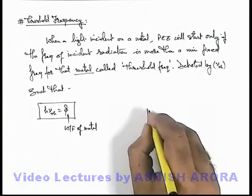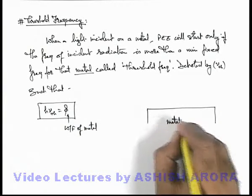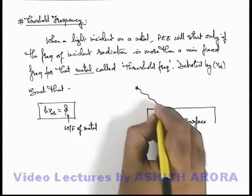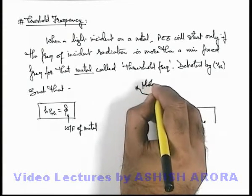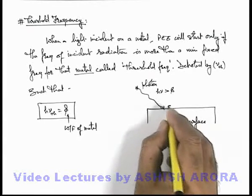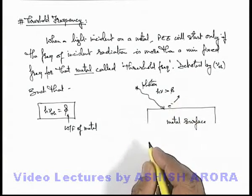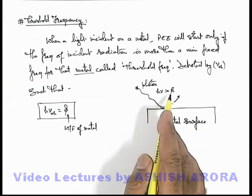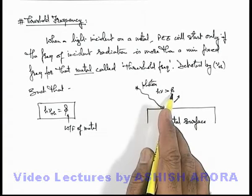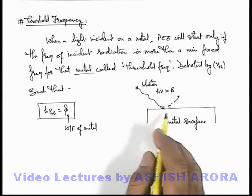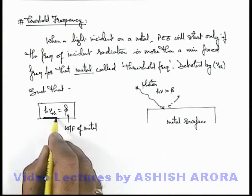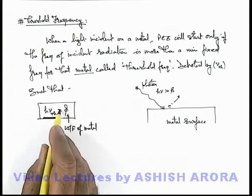That means if we are given with a metal surface, we know to start the photoelectric effect when the light incidents, each photon energy h nu must be more than the work function then only the electrons are ejected out from the metal surface. Because phi is the minimum energy required to eject an electron from the metal surface, if incident energy is less than work function it will not be ejected. So threshold frequency is the frequency of radiation at which the photon energy is exactly equal to the work function.